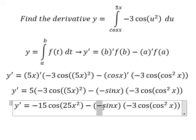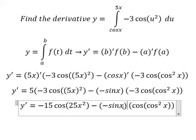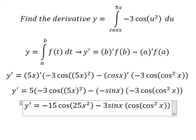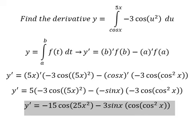So negative and negative, we got positive. Negative number 3 with sine x, we got negative 3 sine x. And that is the final answer.